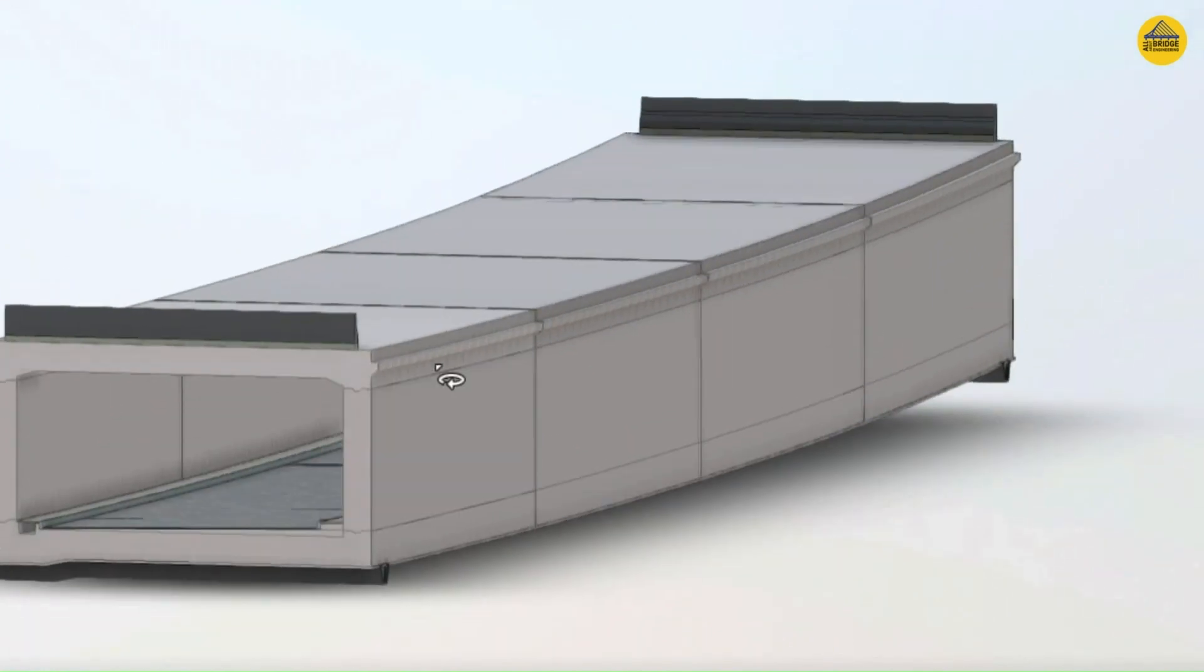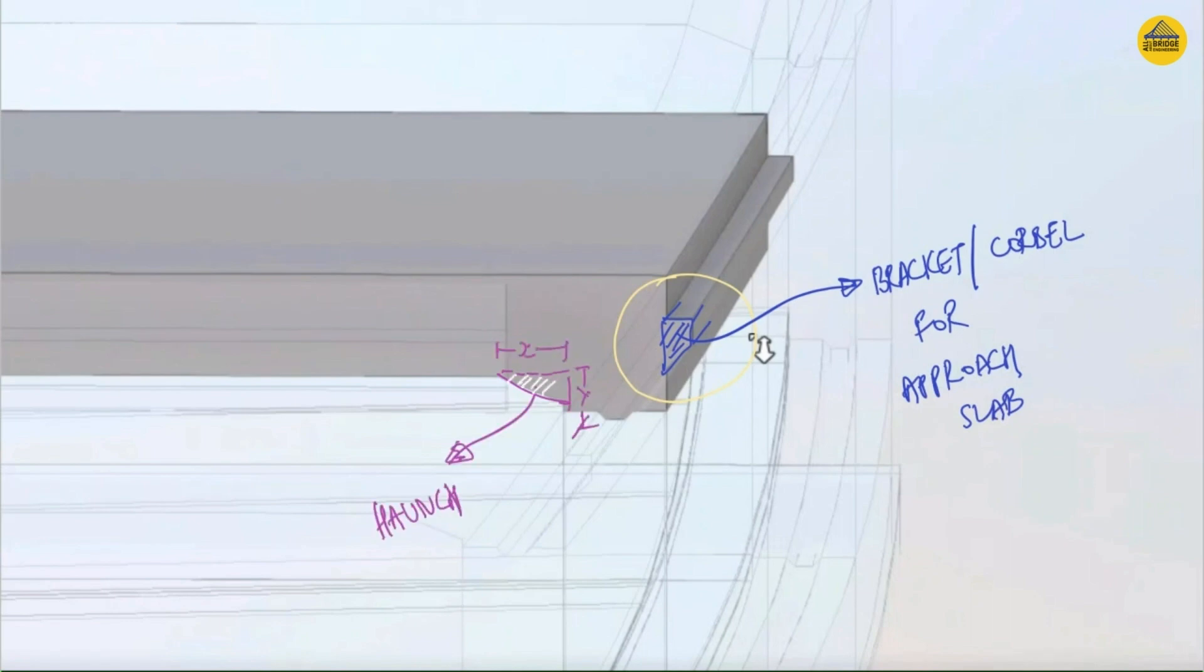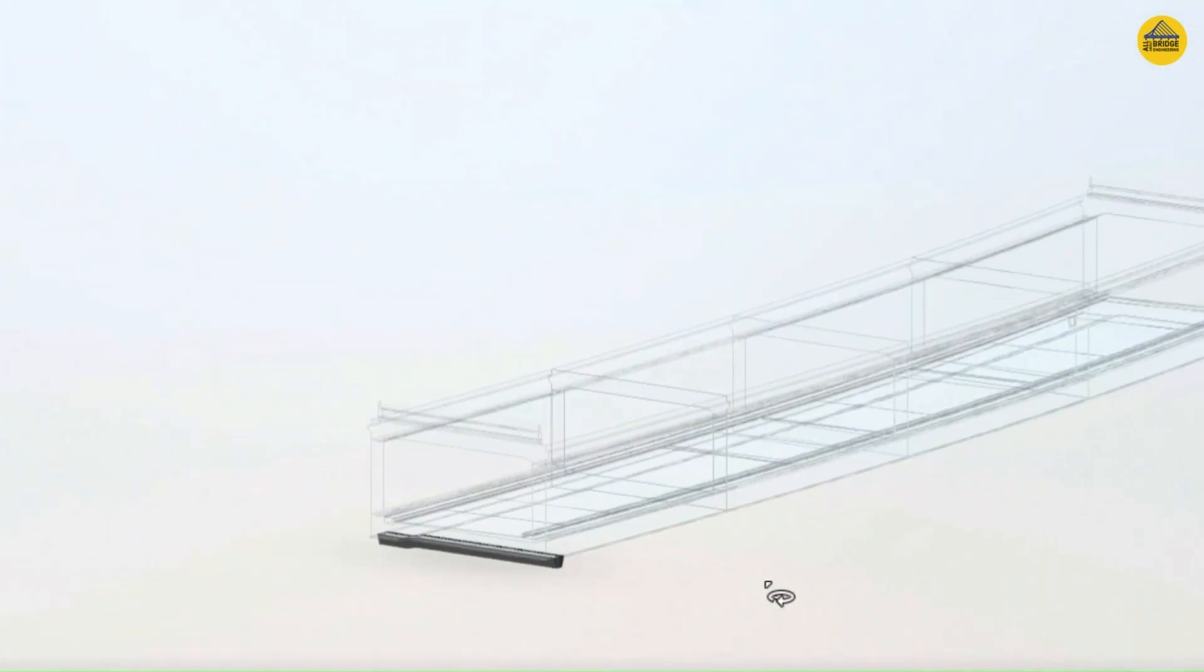Now let's focus in more detail about the bracket or the corbel over which the approach slab will rest. You are seeing on the screen a zoomed version of the top slab and wall junction. The blue shaded portion is the bracket or corbel, and you saw I just hatched out the haunch portion. This is the top slab view, and now let's have a look at the shape of shear key.